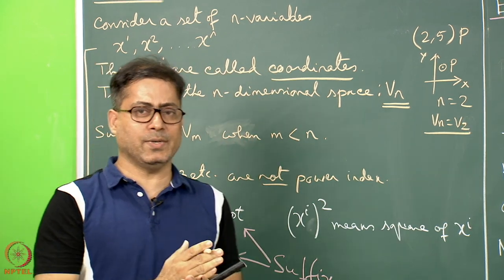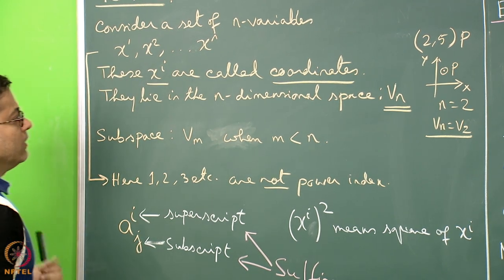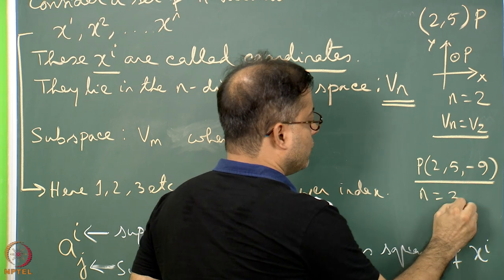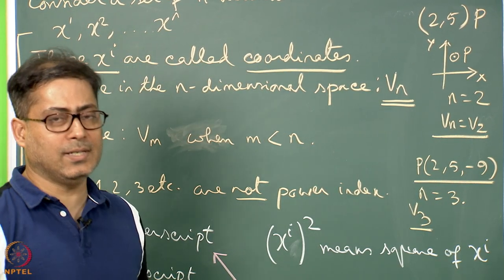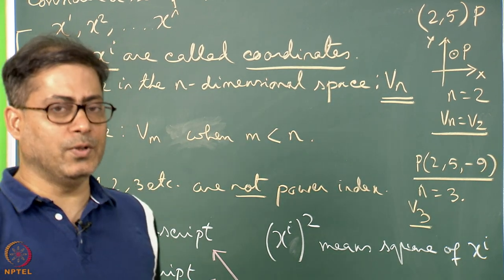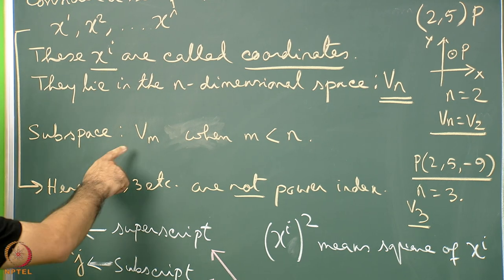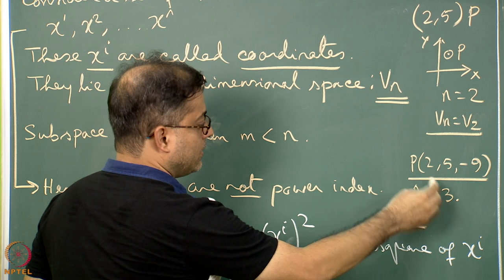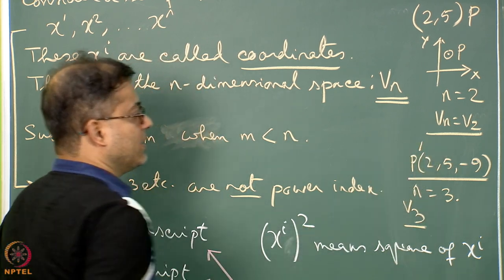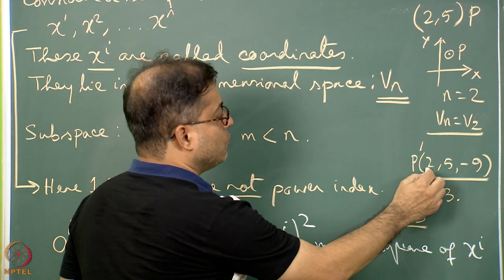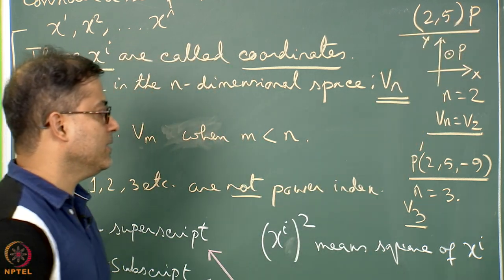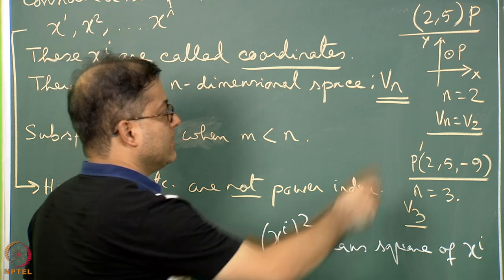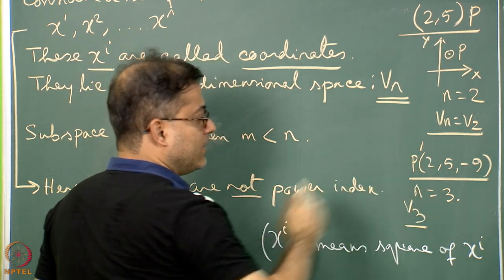Here n equals 2 and Vn is basically V2 — the conventional two-dimensional space where we have done coordinate geometry in our school days. Similarly, if I write the coordinate of a point as (2, 5, −9), then n equals 3, meaning we are dealing with three-dimensional space. A subspace Vm: if this point (2, 5, −9) is in three-dimensional space representing point P', and we take only 2 and 5, writing P as (2, 5), then that point is projected into two-dimensional space — a subspace of the three-dimensional space.